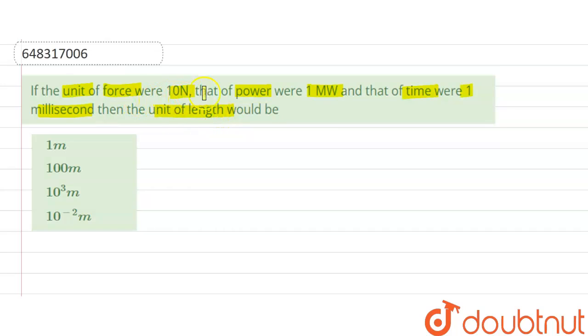unit of force to be 10 Newtons, unit of power 1 megawatt, and unit of time 1 millisecond. Our options are: Option 1 is 1 meter, Option 2 is 100 meters, Option 3 is 10³ meters, and Option 4 is 10⁻² meters.